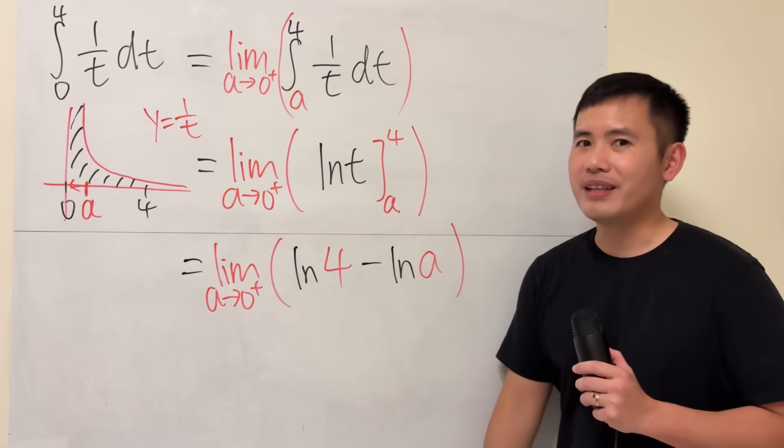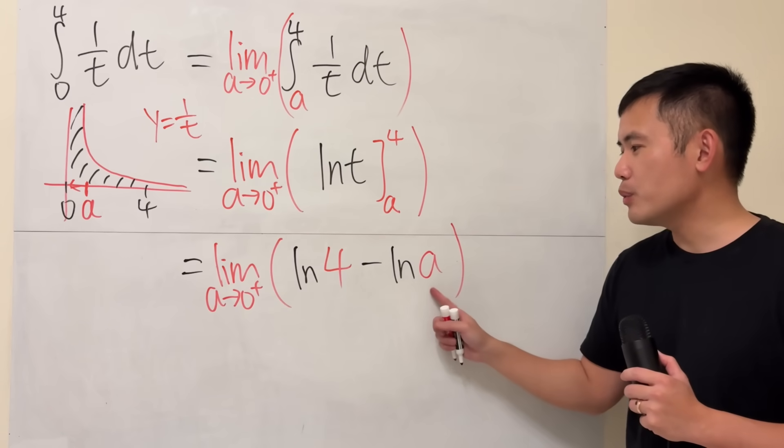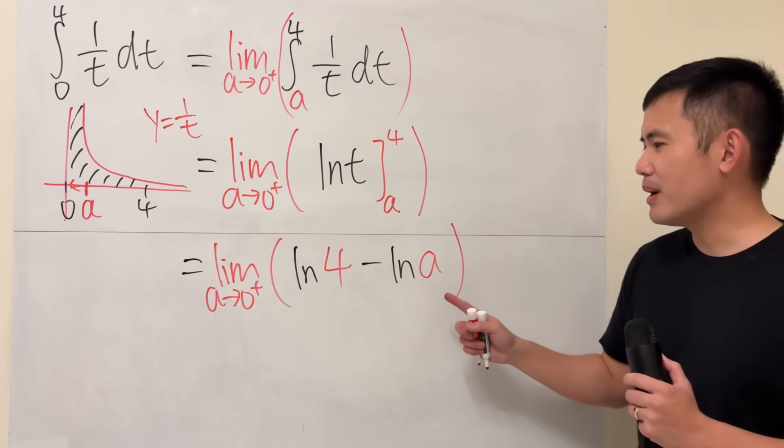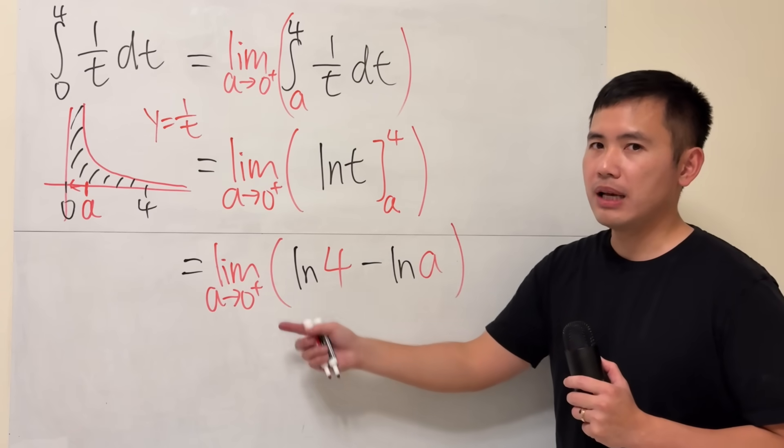So it's actually a limit question now. This is just a constant, so it doesn't matter. But the problem with this right here is that we have to think about, hmm, what's ln a as a approaching 0 plus?